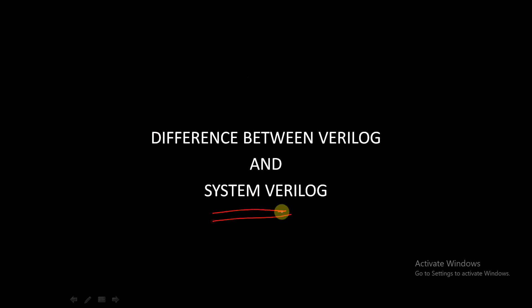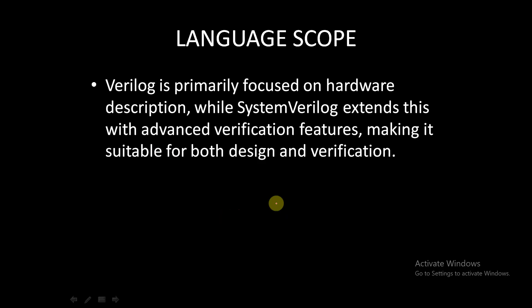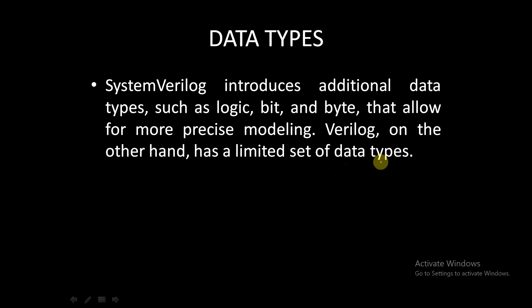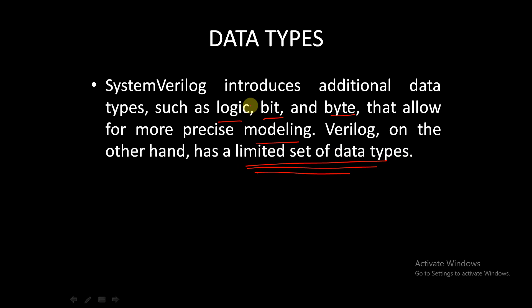Coming to the difference between Verilog and SystemVerilog. In terms of language scope, Verilog's primary focus is on hardware description, while SystemVerilog extends this with advanced verification features, making it suitable for design as well as verification. In terms of data types, SystemVerilog introduces additional data types such as logic, bit, and byte, that allow for more precise modeling, whereas Verilog has a limited set of data types.